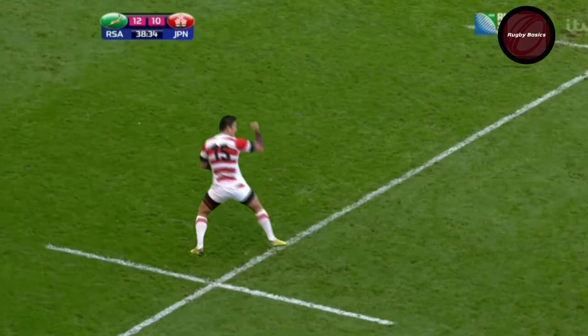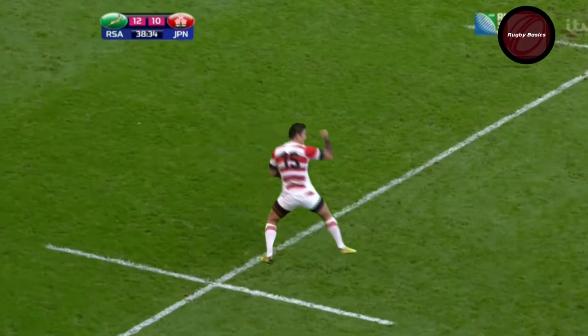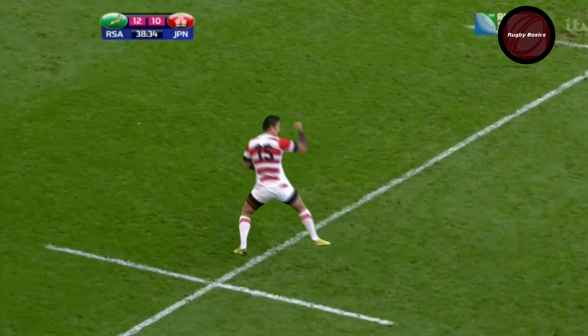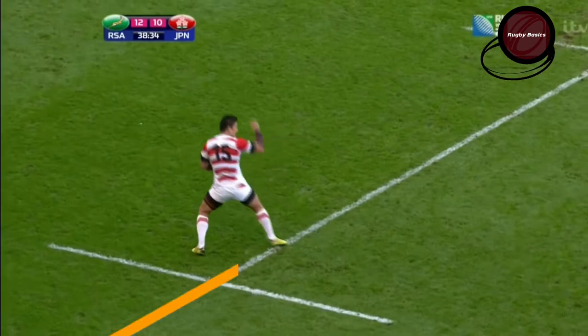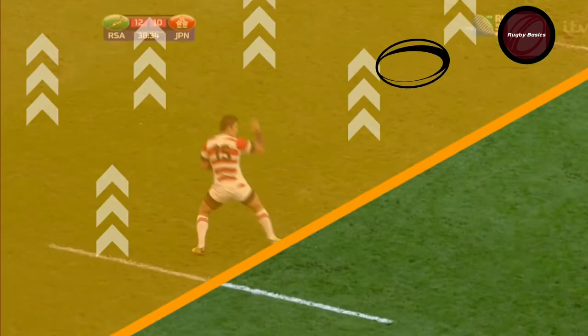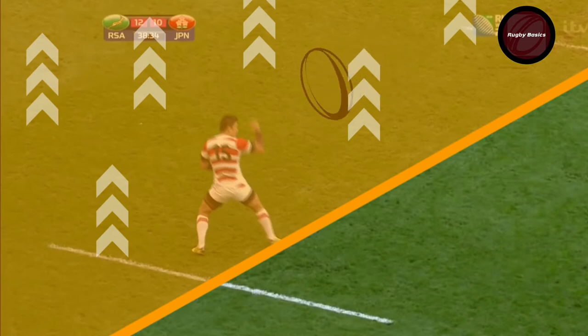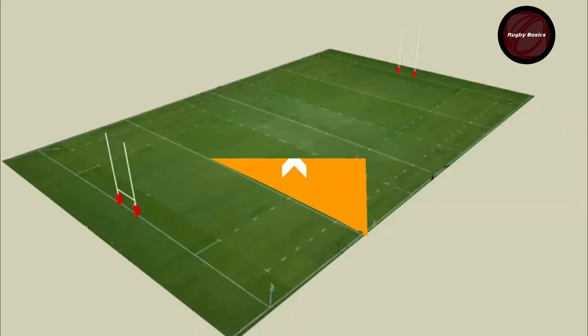To claim a mark, a player must have at least one foot on or behind their own 22 meter line when catching the ball, or when landing having caught it in the air. When you catch the ball, make sure it crosses the plane.